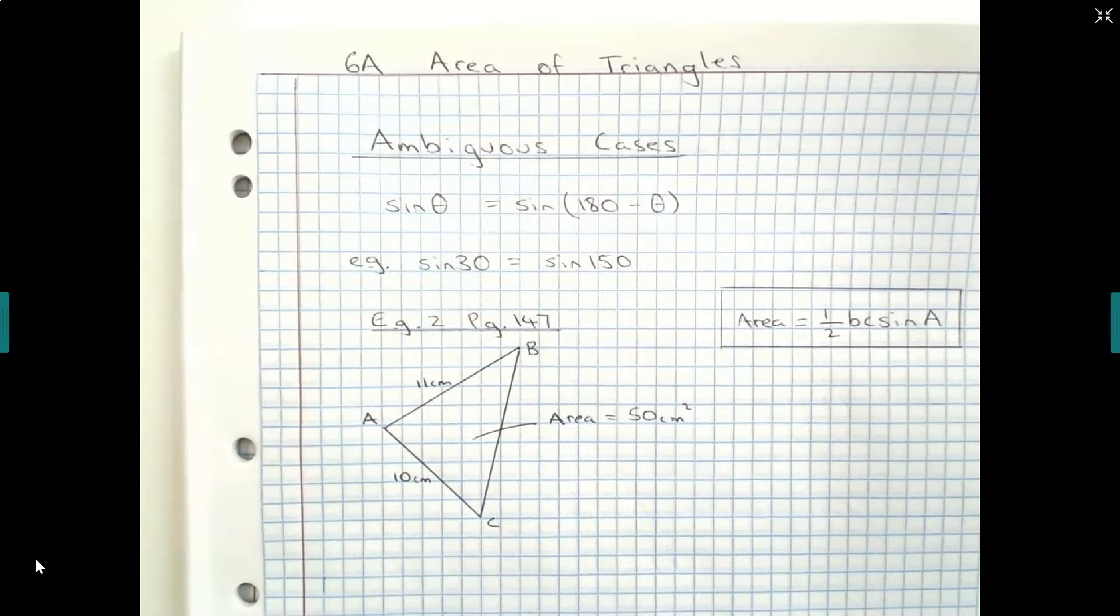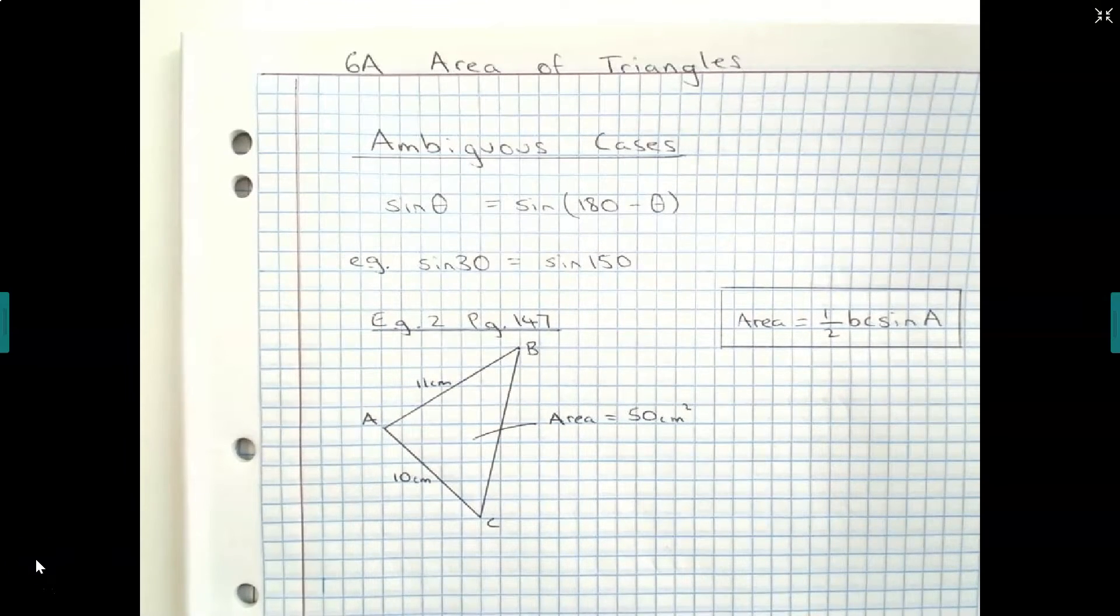I'd like to draw your attention to something you may have noticed in chapter 6a. In some of the questions, you would have noticed that some of the triangles could have had more than one angle which would result in their area which was given.